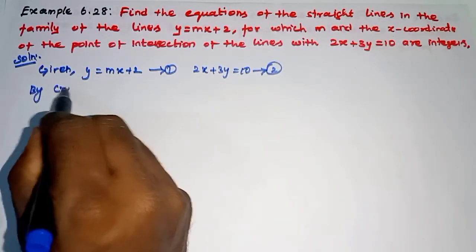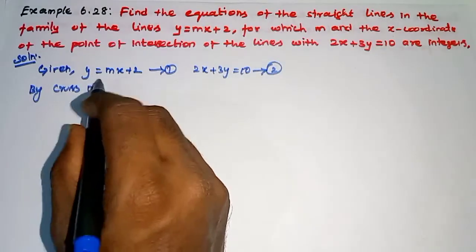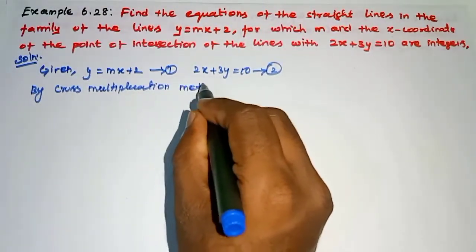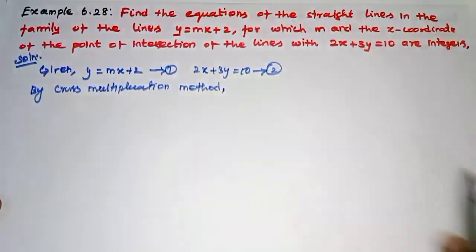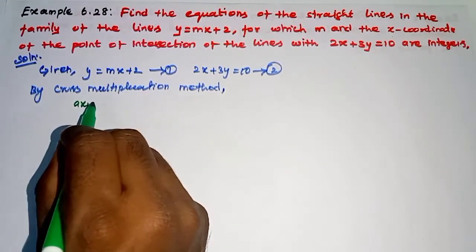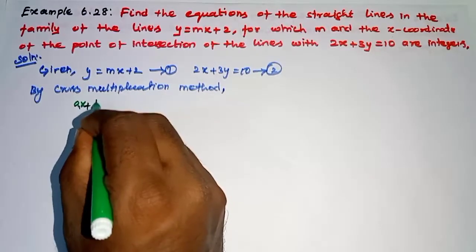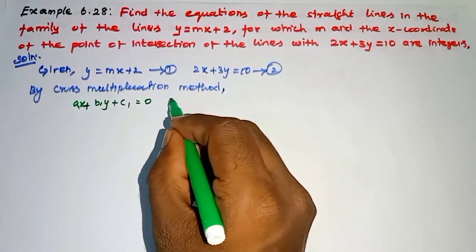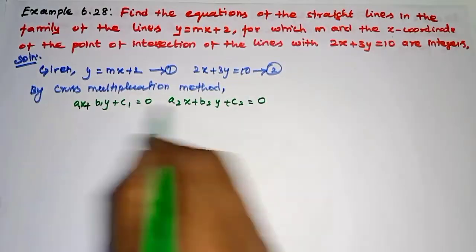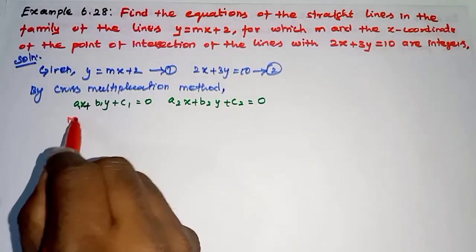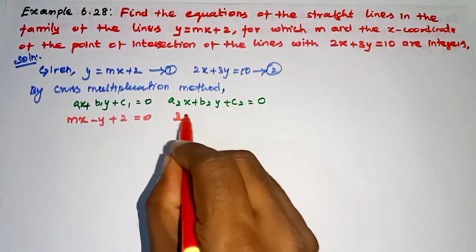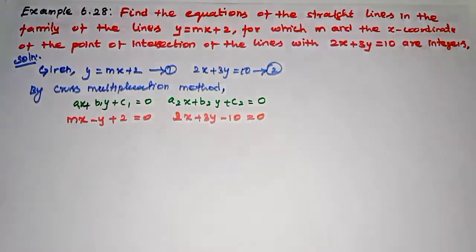Now by cross multiplication method, the general form is A1x + B1y + C1 = 0 and A2x + B2y + C2 = 0. We rearrange: mx − y + 2 = 0 and 2x + 3y − 10 = 0.